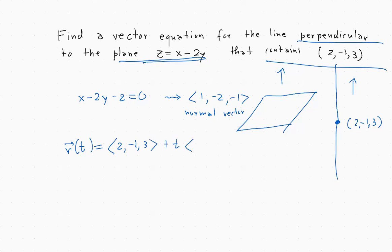And that's it. You can leave it like that, or you can put them in one vector and write it as <2+t, -1-2t, 3-t>, and that's it.